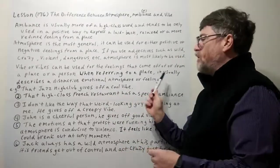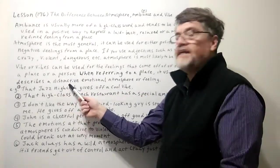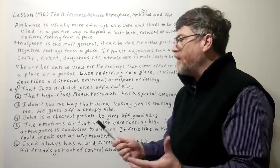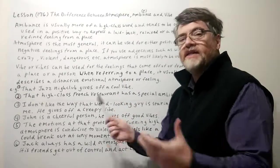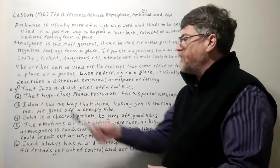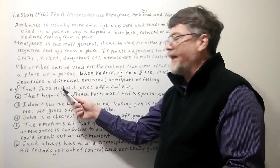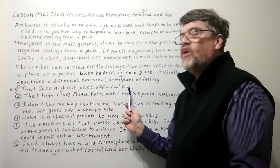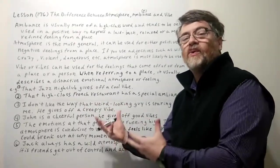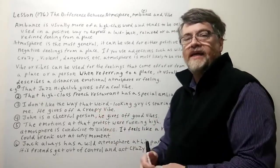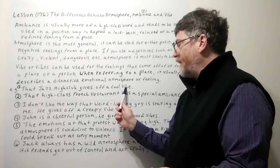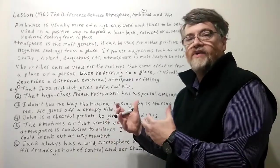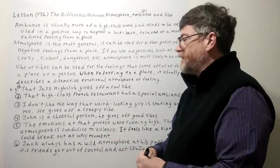When referring to a place, vibe usually describes a distinctive emotional atmosphere or feeling. The first example covers vibe from a place: 'That jazz nightclub gives off a cool vibe.' Especially with the word cool, we like to associate it with vibe. That's an example of how you might use it for a place.